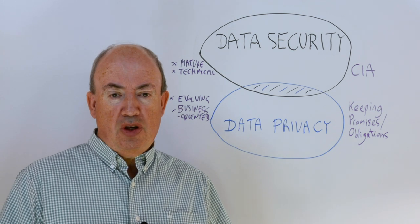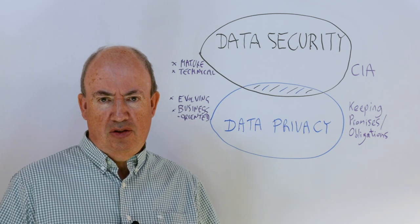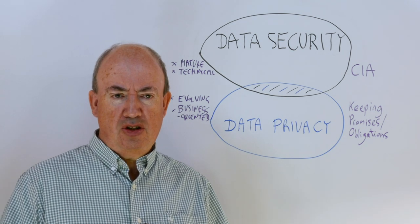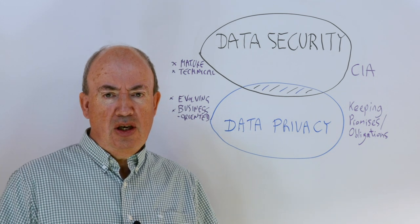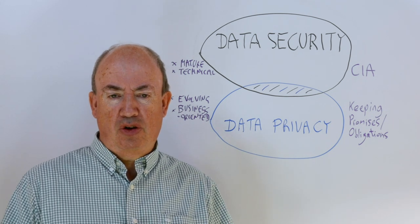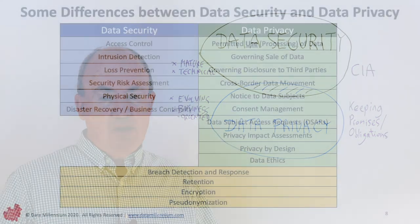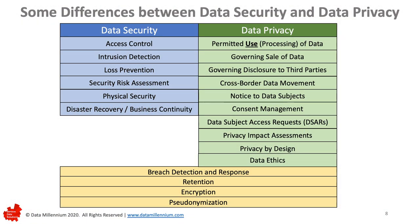If we compare data privacy and data security in a bit more detail, it's possible to see how they differ. Data security will be concerned with access controls, intrusion detection, loss prevention, security risk assessments, physical security, and disaster recovery and business continuity.